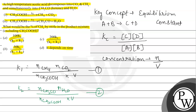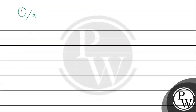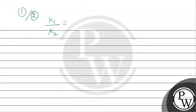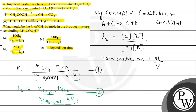Now we take the ratio: dividing equation 1 by equation 2 gives K1 divided by K2 equals the number of moles of CH4 times the number of moles of CO2, divided by the number of moles of CH2CO times the number of moles of H2O. Looking at the options, values are given in terms of K1 divided by K1 plus K2.